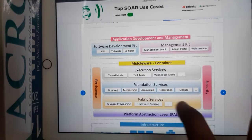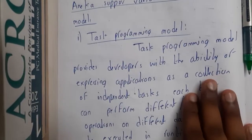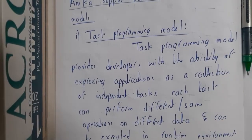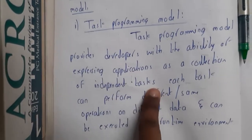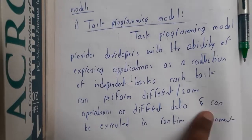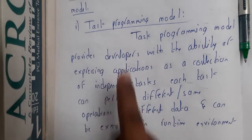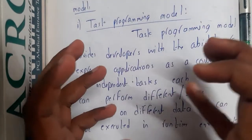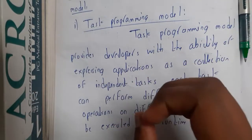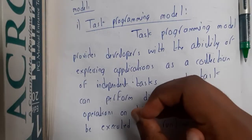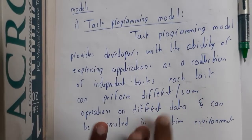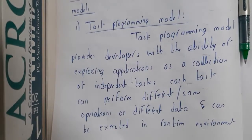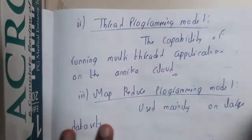We have three different types of programming models. The first is the Task Programming Model. It provides developers with the ability of expressing an application as a collection of independent tasks. Each task can perform a different or same operation on different data, and can be executed in a runtime environment. Basically, you take everything you want to perform and break it into tasks. These tasks could perform the same or different operations, and you get outputs at runtime.